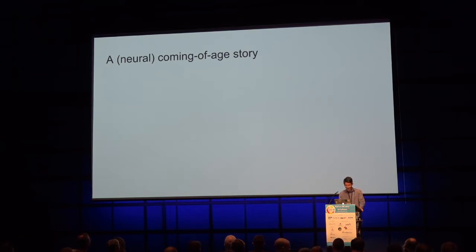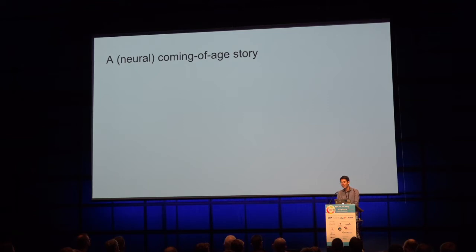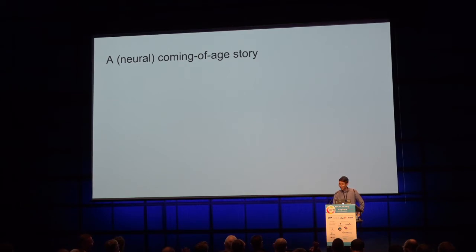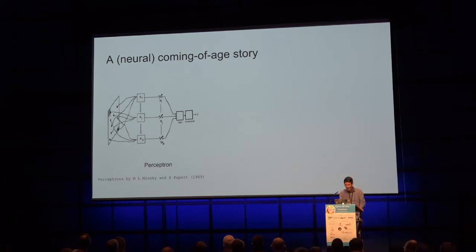What I'm trying to tell you today is how the simple neuron evolved into what we know today — a very thousand-layer huge monster. Quick show of hands: how old do you think neural networks are? Less than 20 years? Less than 30? Less than 40? Less than 50? Less than 60? It's actually exactly 60 years. The very first neuron was proposed by Frank Rosenblatt in 1957.